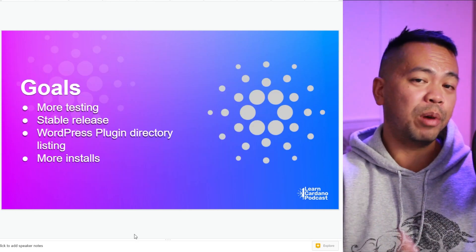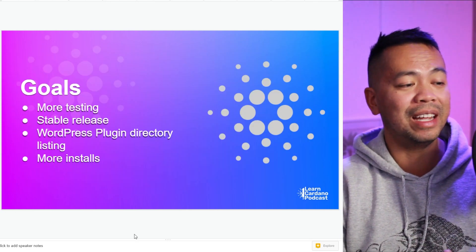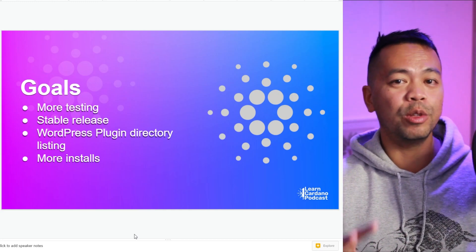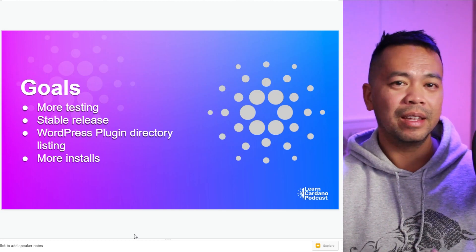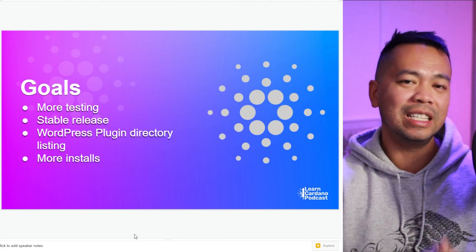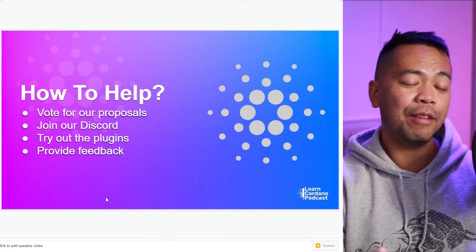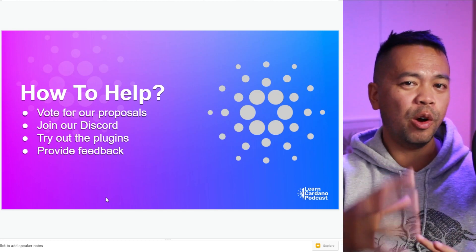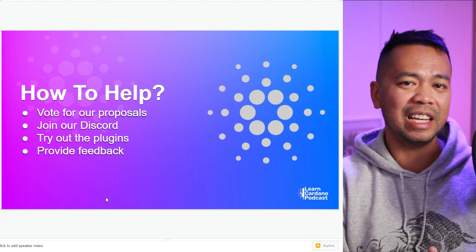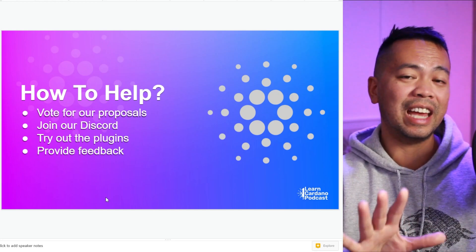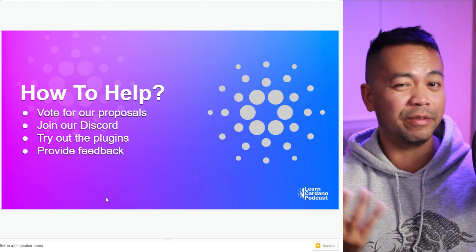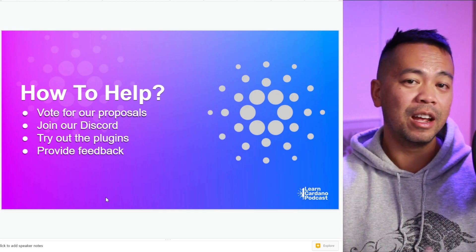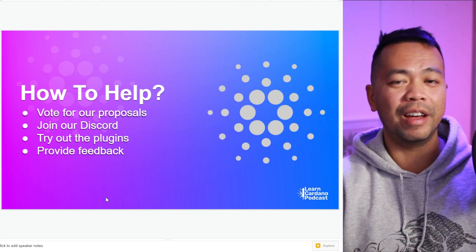Our goal for Project Catalyst and the plugin at the moment is to get more testing done, and then we want to list this on the WordPress plugin directory, which gets millions of views a day. We have five catalyst proposals, each going through different aspects of the plugin. You can join our Discord server where you can get live support and of course provide feedback. The more feedback and testing we get, the more refined this plugin becomes.